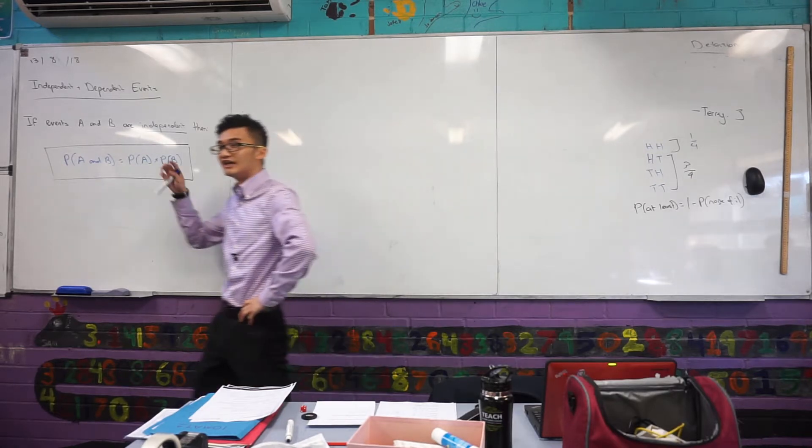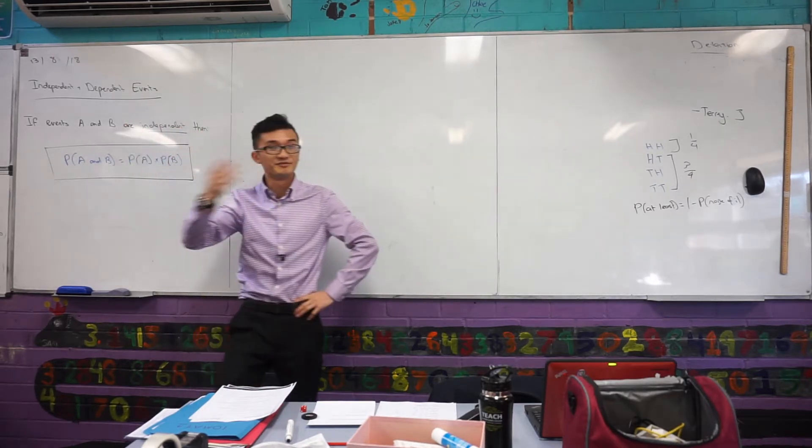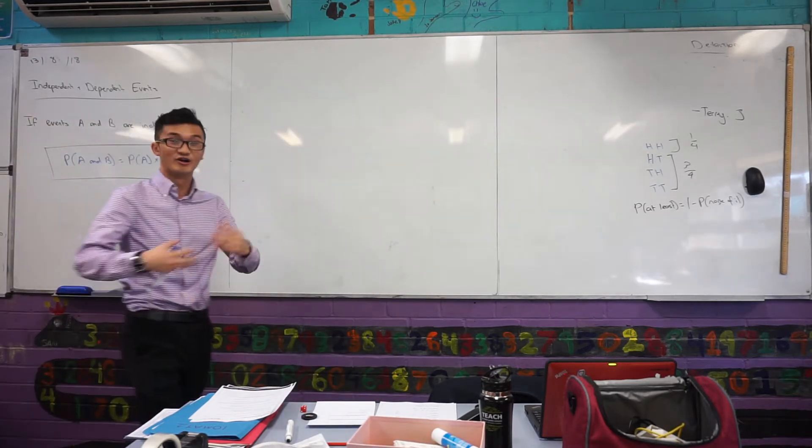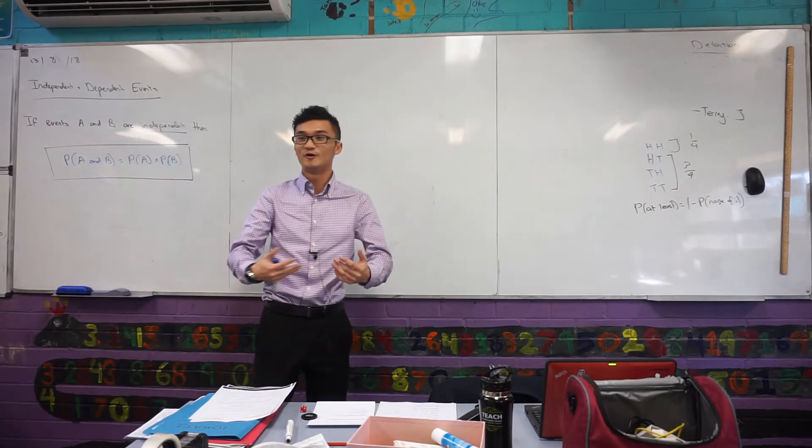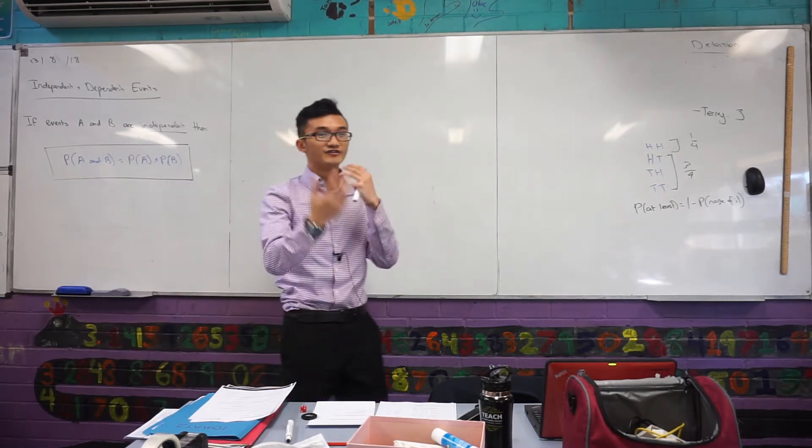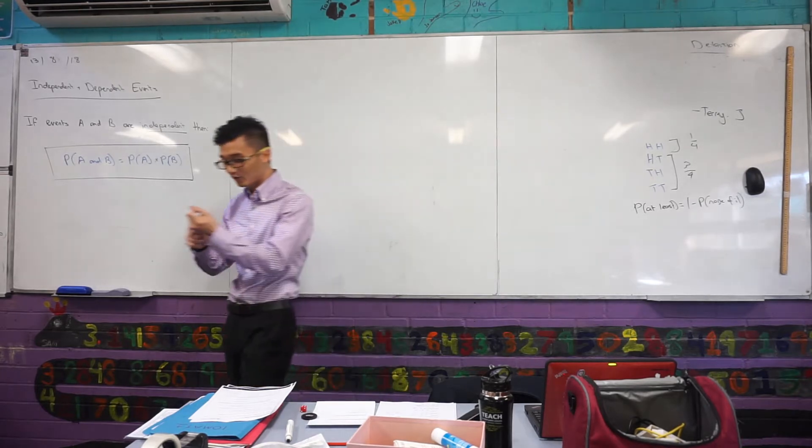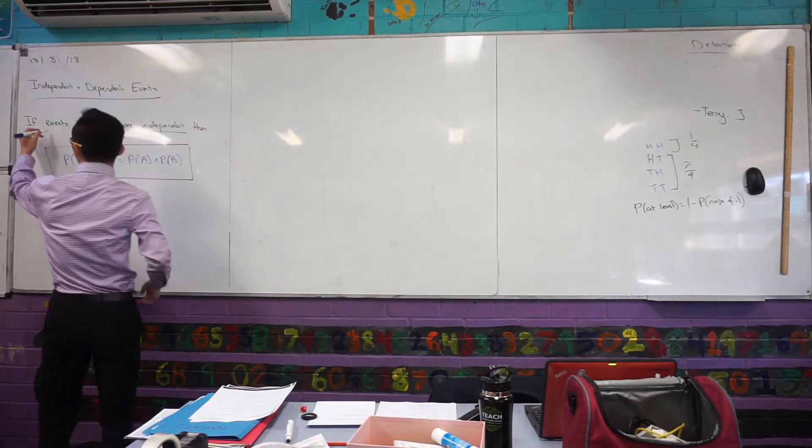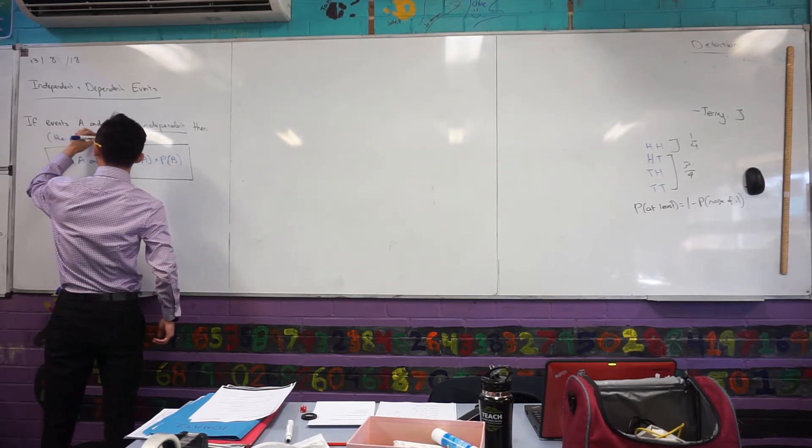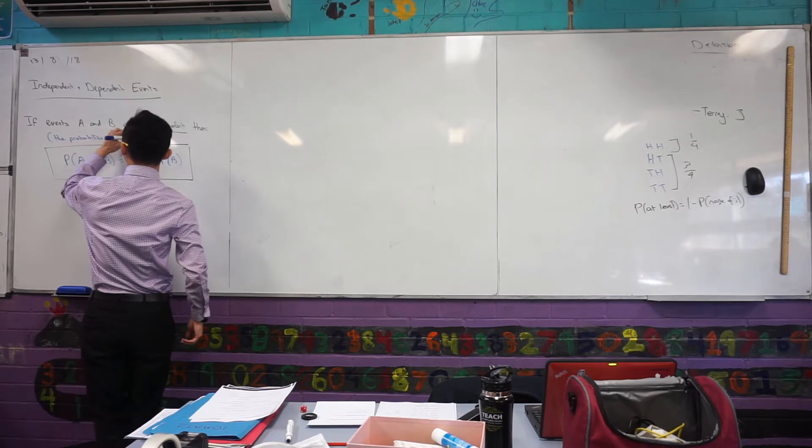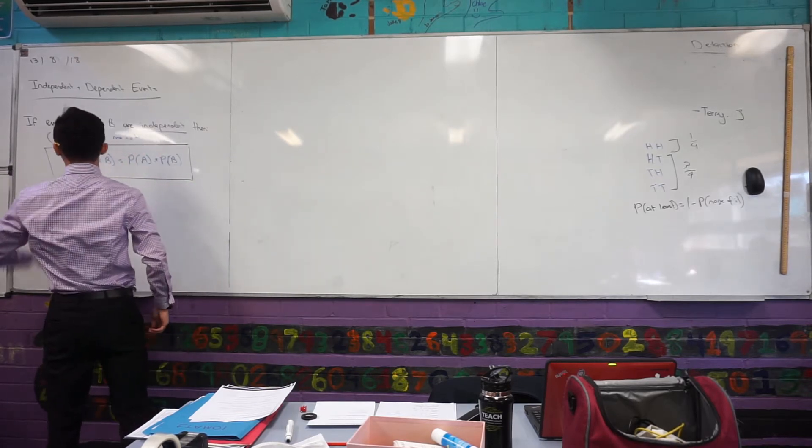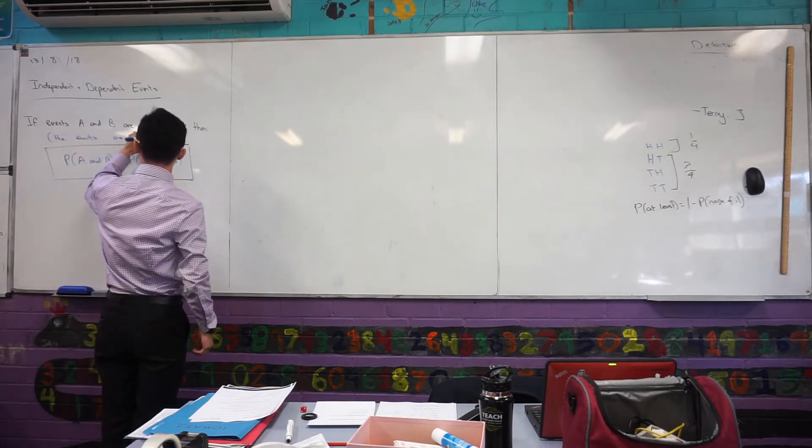Now in probability, we use these words to describe things. For example, independent. When you talk about something that's independent, maybe when you grow up, you become more independent of your parents. You can do things by yourself, right? So A and B, we're saying that they are kind of separate in a sense. What do I mean by that? Well, I mean that the events are not affected by each other.